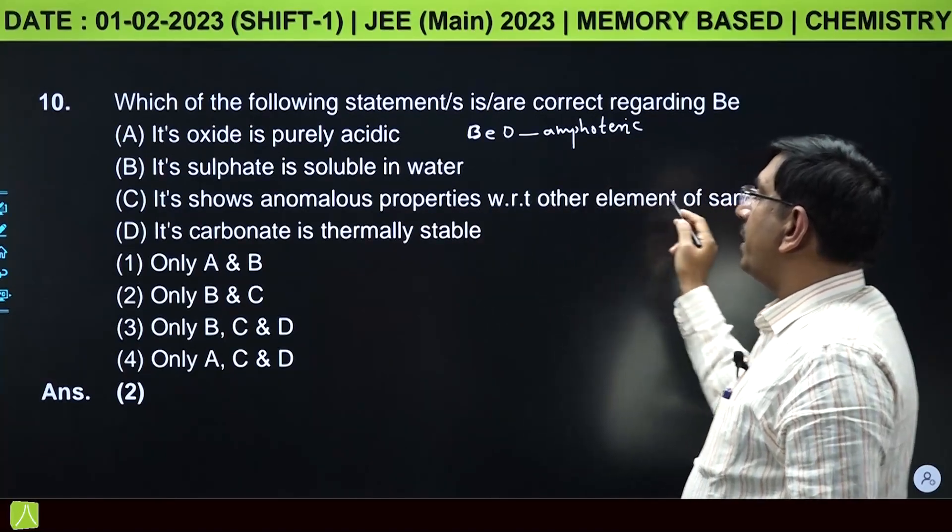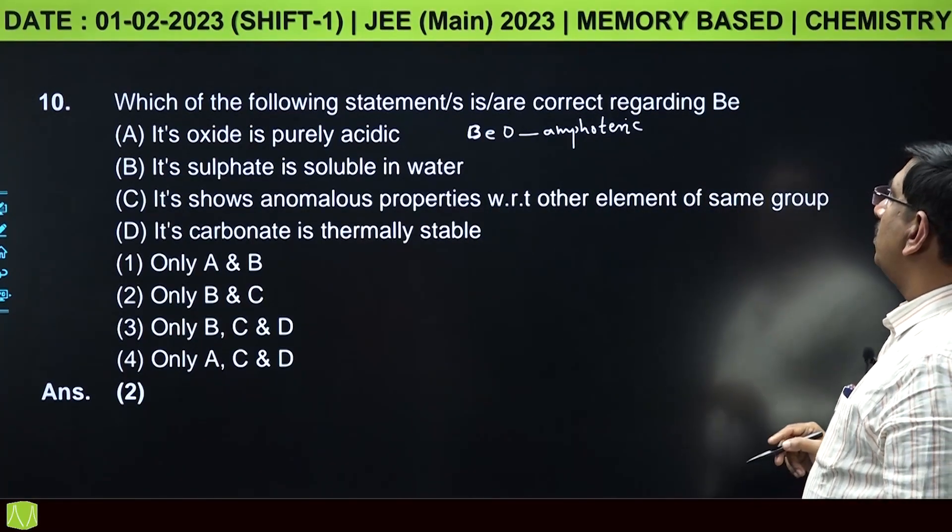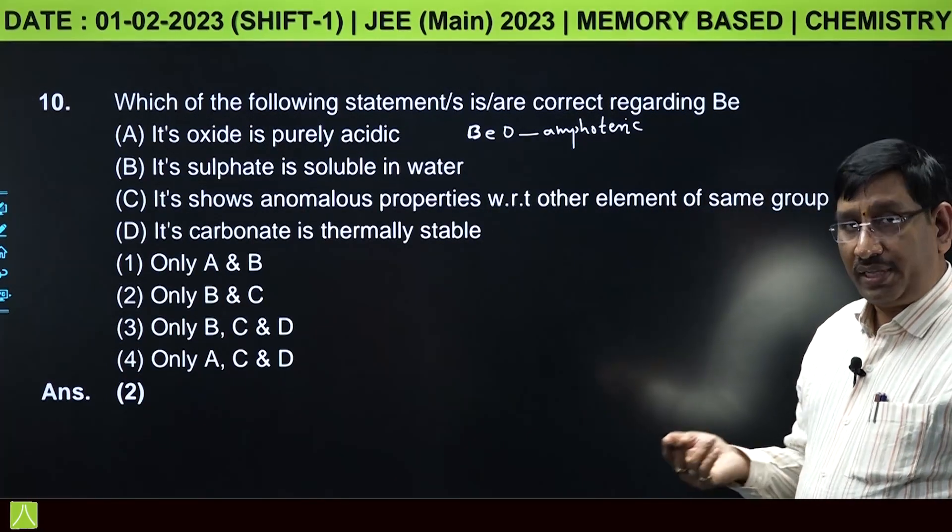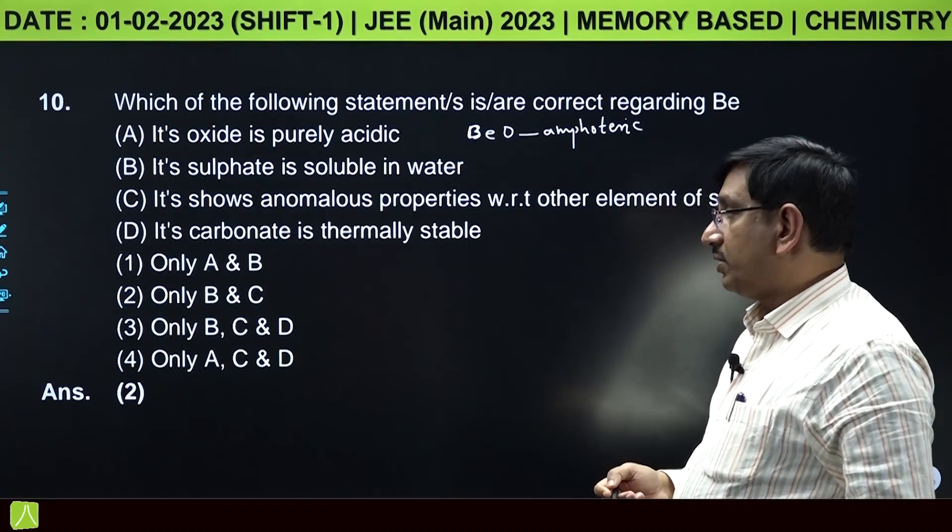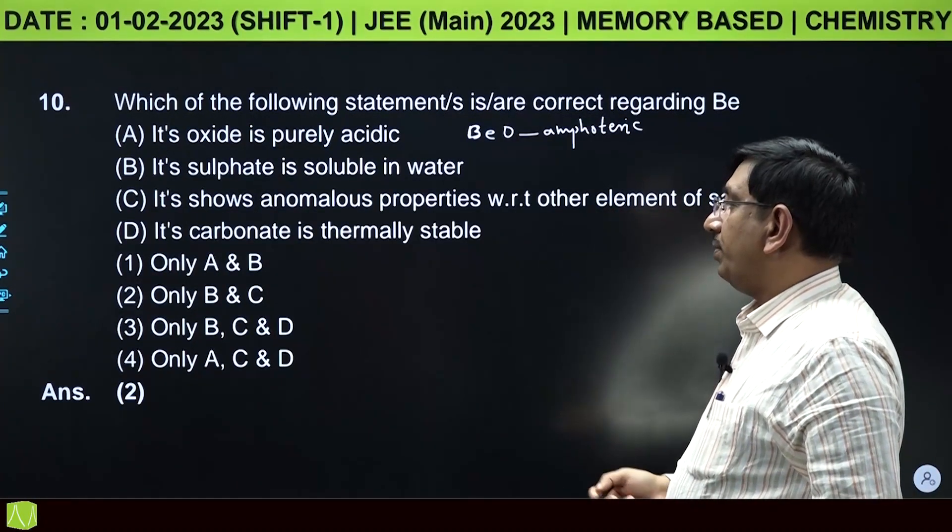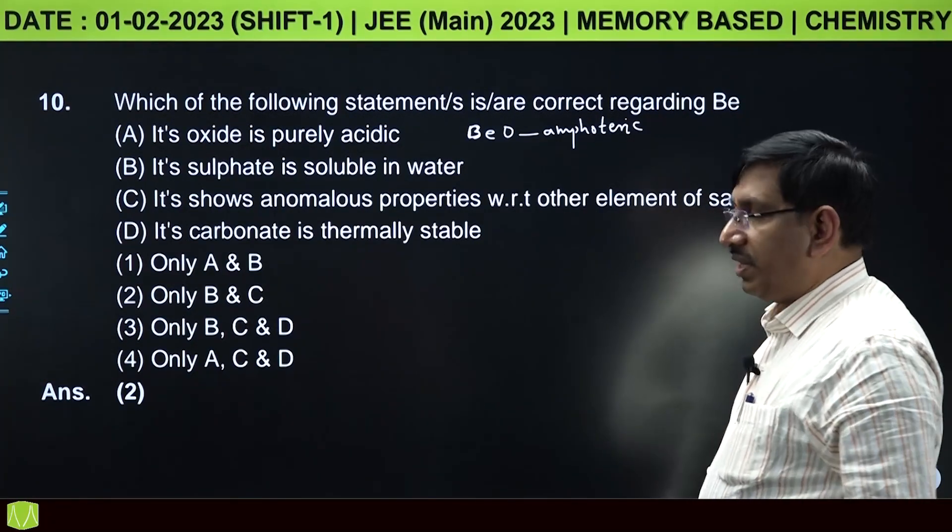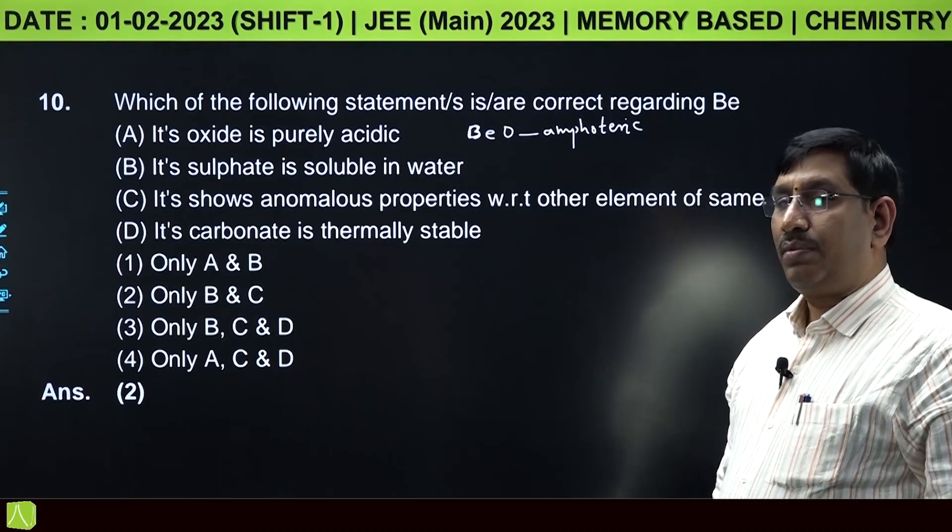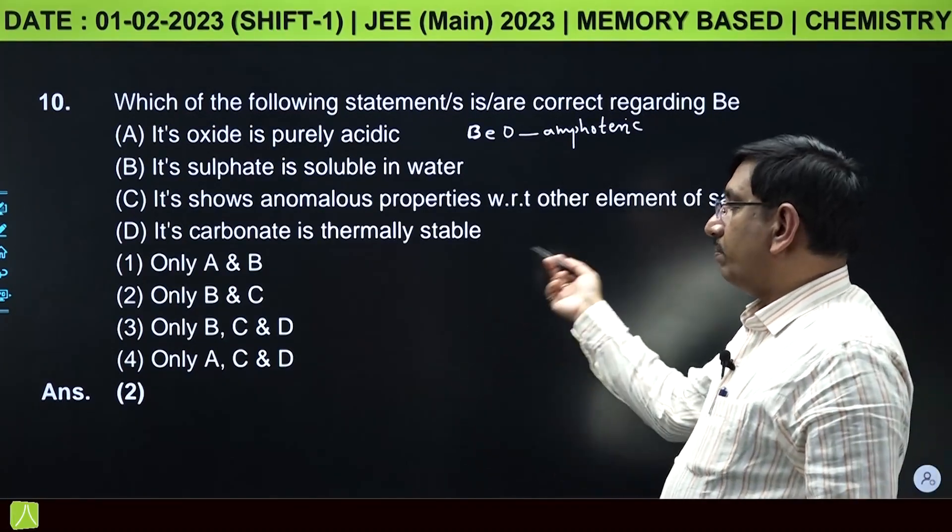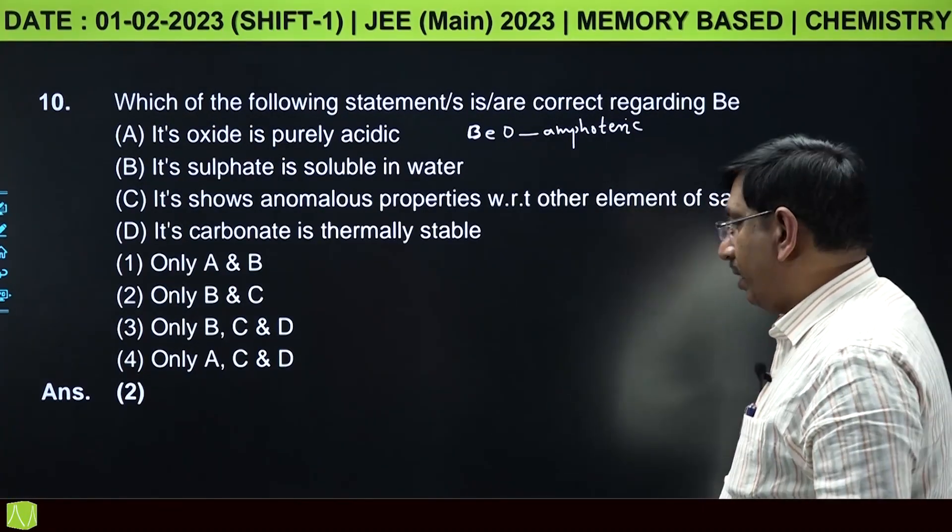It shows anomalous properties with respect to other elements of same group - yes, correct. Its carbonate is thermally stable - no, it is thermally unstable and decomposes to give beryllium oxide and carbon dioxide.